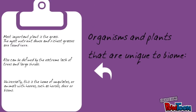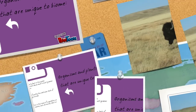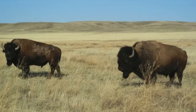There are organisms and plants that are extremely unique to this biome. Perhaps the most important plant is the grass here — this is the most nutrient-dense and richest grass in the world. Also, this biome can be defined by the extreme lack of trees and large shrubs.